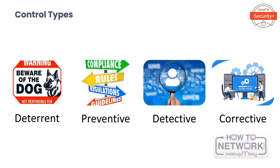Now let's talk about control types. The categories of controls we just described are classified by functional use or by the time when they are in use. The control types are: deterrent, preventive, detective, and corrective.